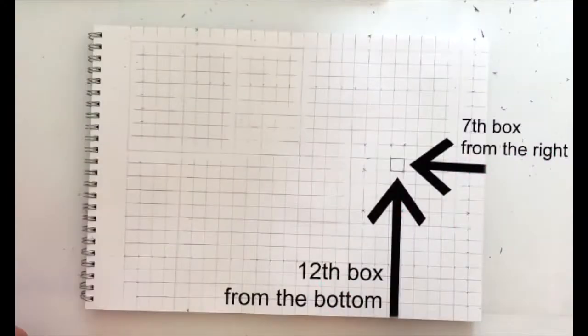You can start anywhere on the page, but to make things easier I suggest you start 12 boxes from the bottom and 7 boxes from the right and draw a square. This will be the centre of our spiral.